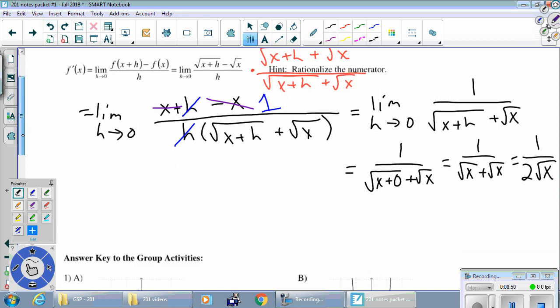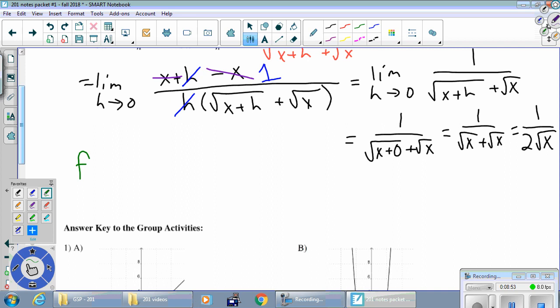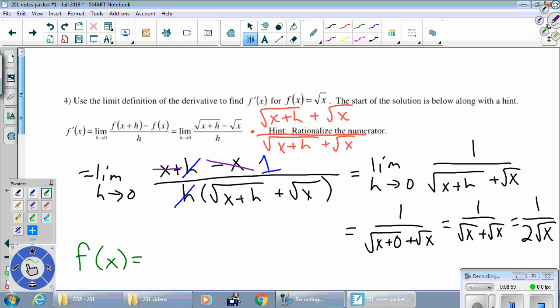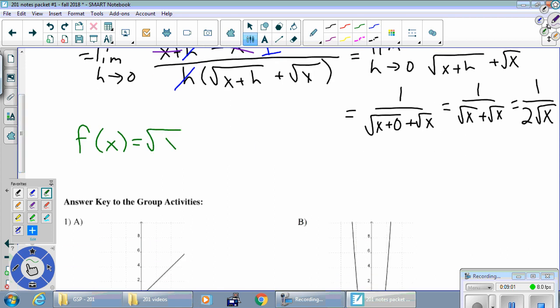So I'll write that as a big conclusion down here, just so that we're good with the notation. For f of x equals, what did we start with? I think it was just root x. If f of x is root x, then f prime of x is one over two root x.